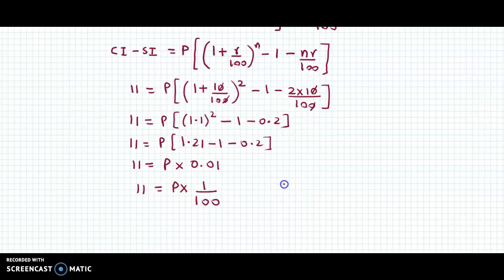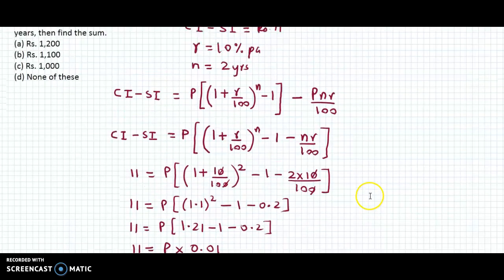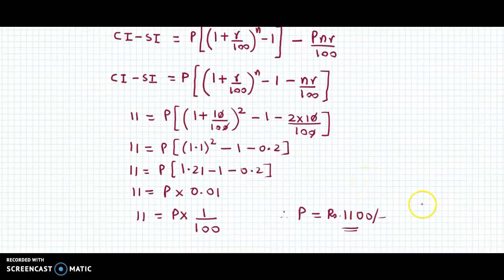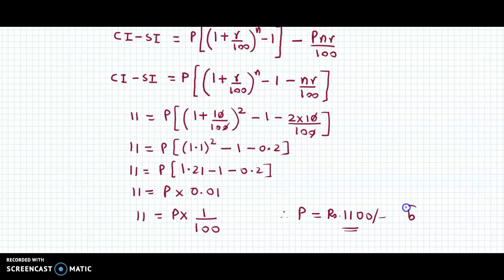If we cross multiply, we get P equals 11 into 100, that's 1100. So the principal amount is 1100. The answer to this question is option B.